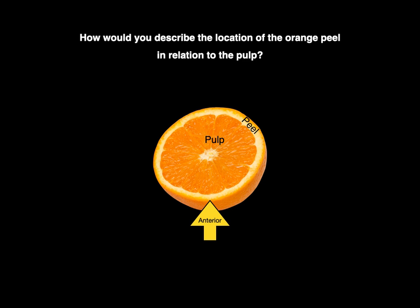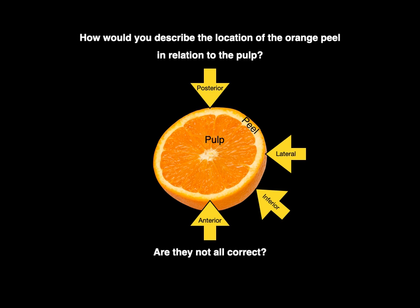Well, the peel is anterior to the pulp — or no, it's actually posterior. No, it's actually lateral. No, actually this part of the peel is inferior. Are they not all correct?